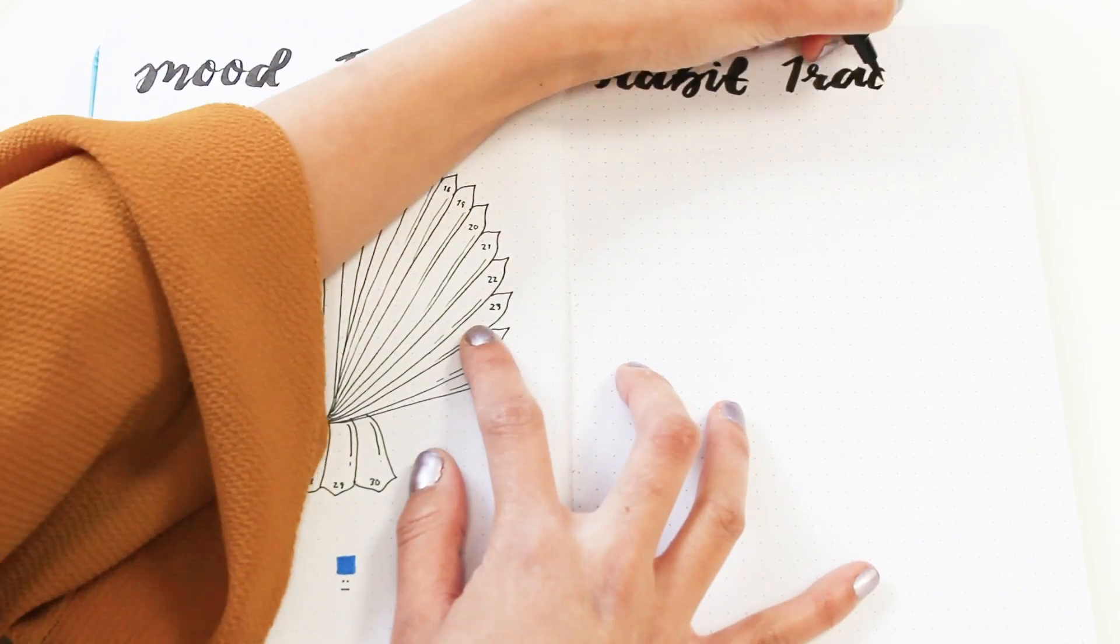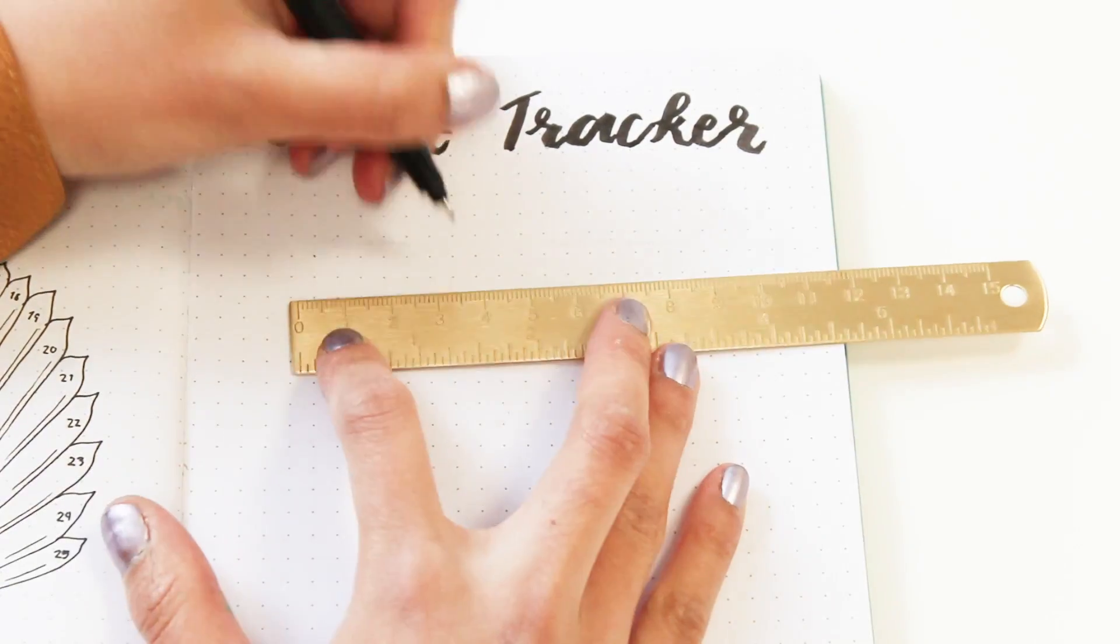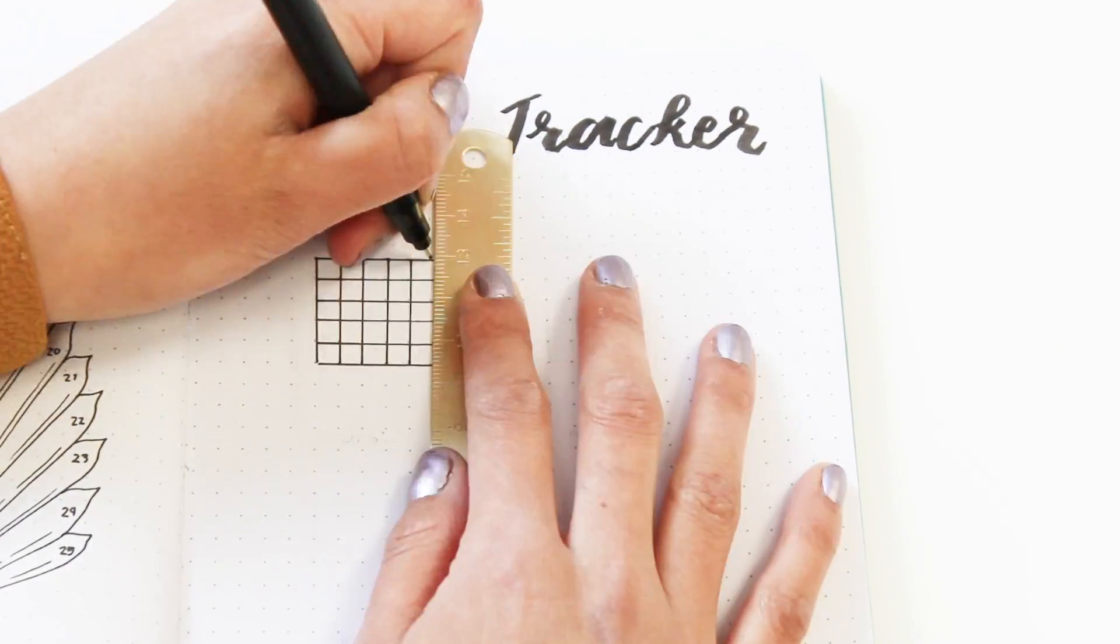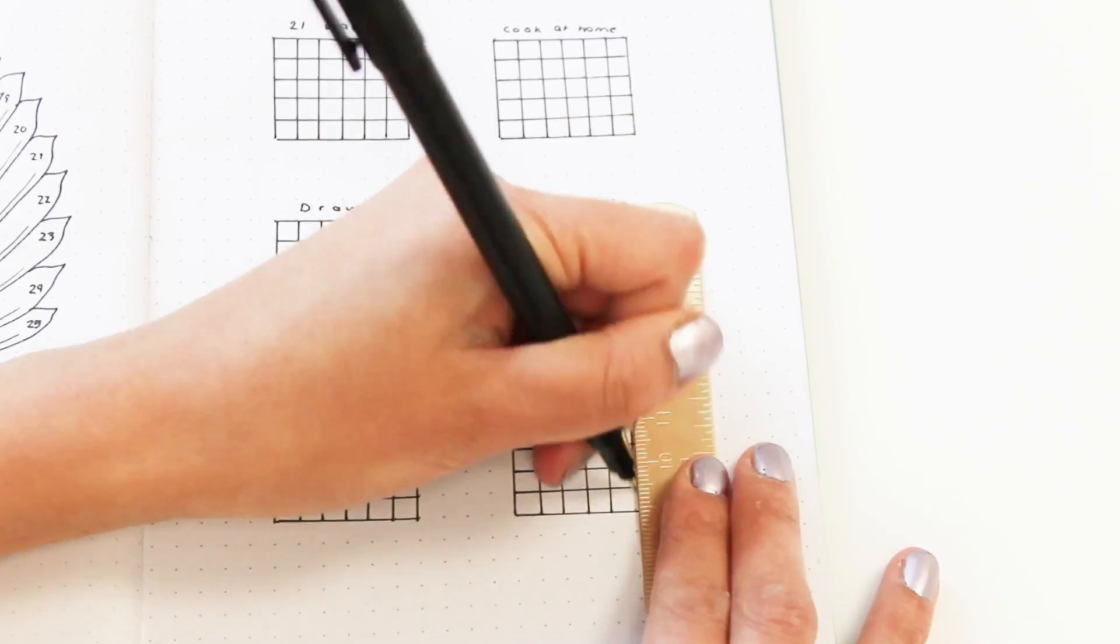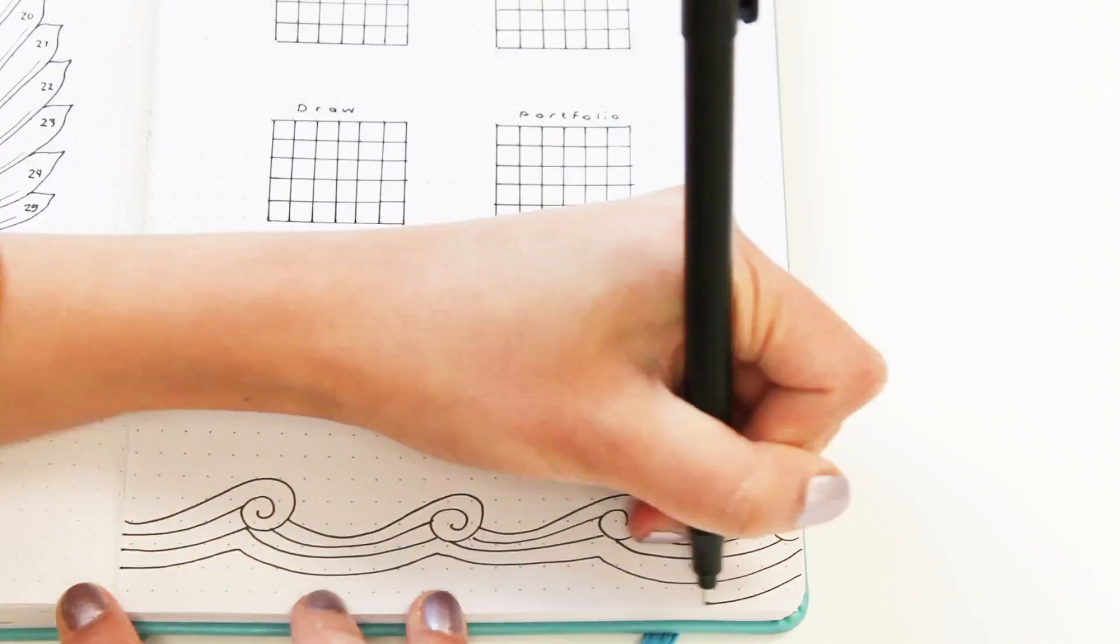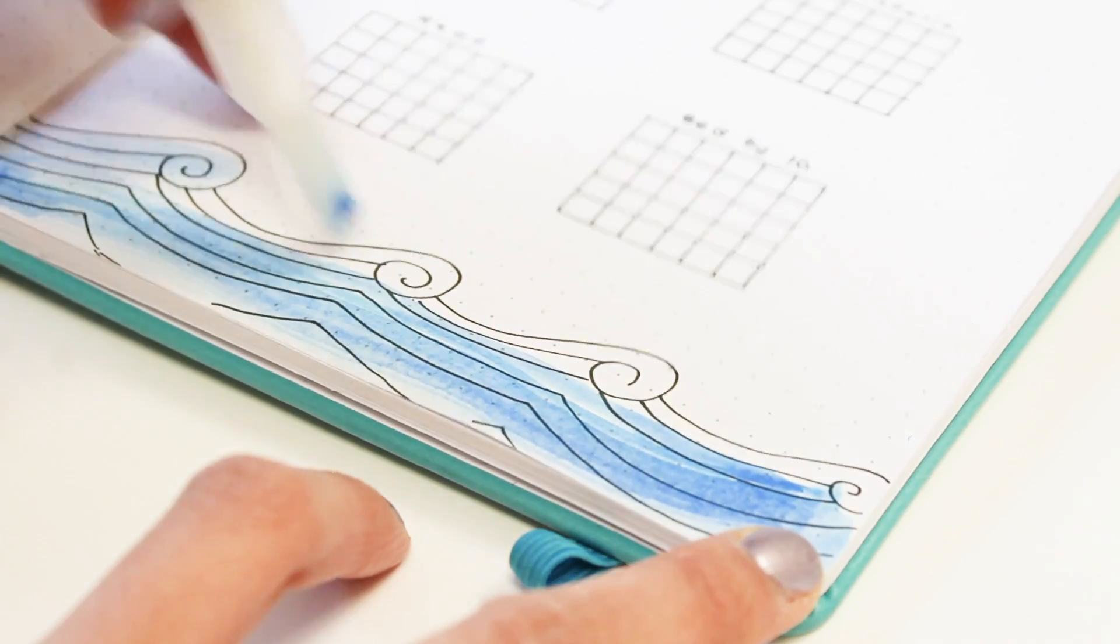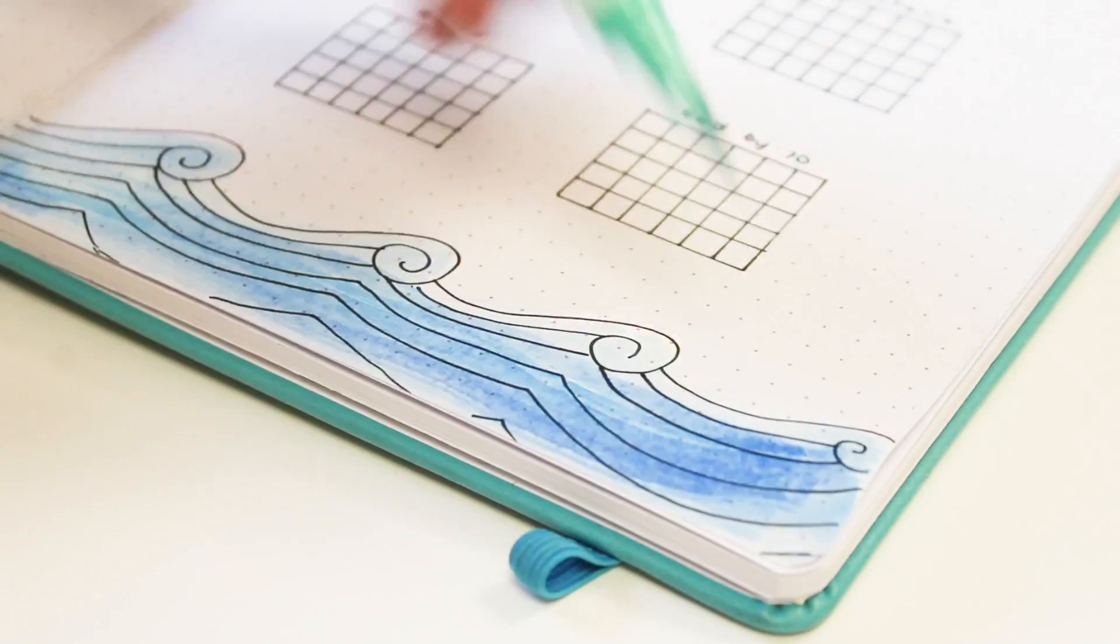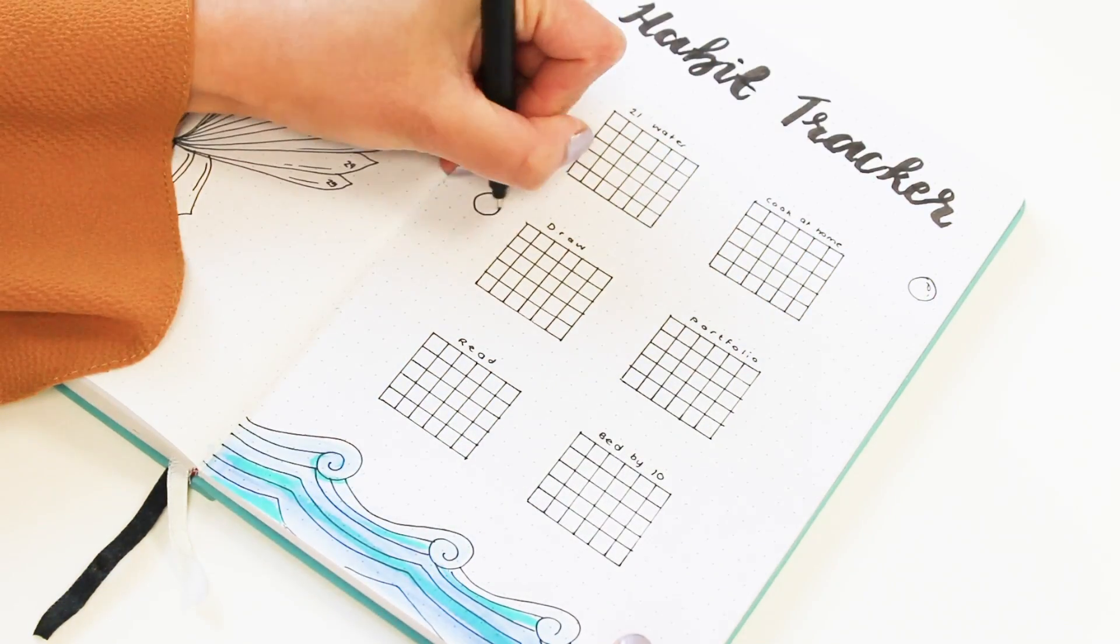The next one is my habit tracker. For this one, I'm just keeping it simple with a grid for each habit I want to track. Then I'm just decorating the bottom of the page with some waves and then just a few little bubbles.